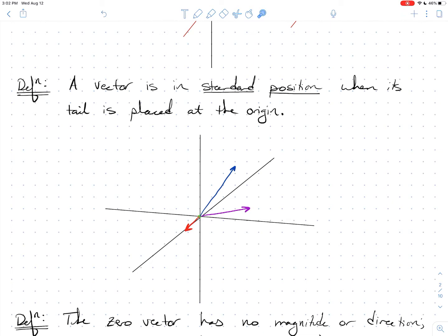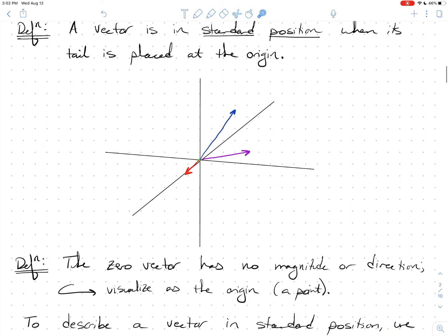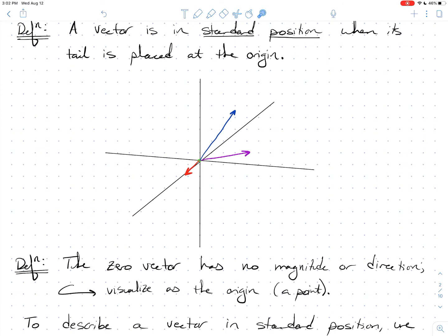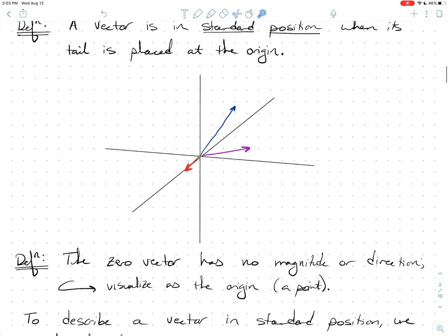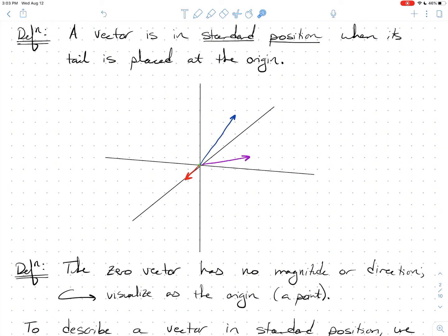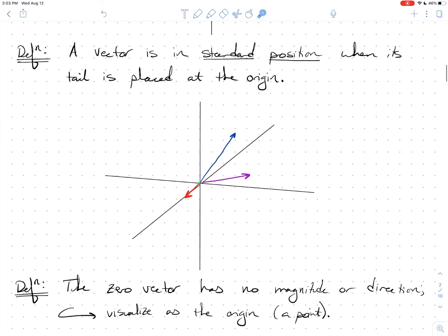I want to mention the zero vector. The zero vector doesn't really have any magnitude or direction, so it's a special case. We're going to add it to the set of vectors anyway and think about it as just a point. In standard position, you can think of the zero vector as simply being at the origin.